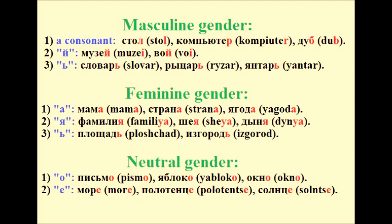And finally, the nouns that end in the vowels О or Е refer to neutral gender. For example: письмо (letter), яблоко (apple), окно (window), море (sea), полотенце (towel), солнце (sun).